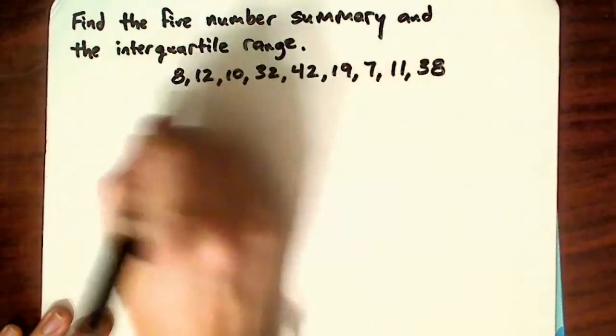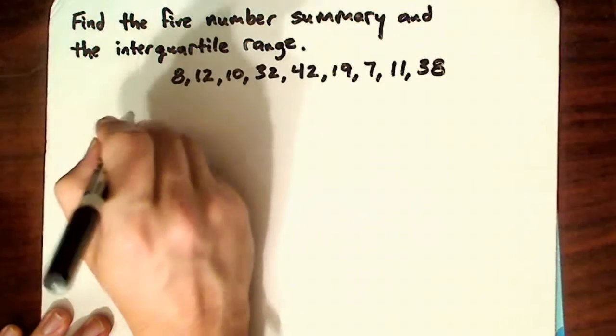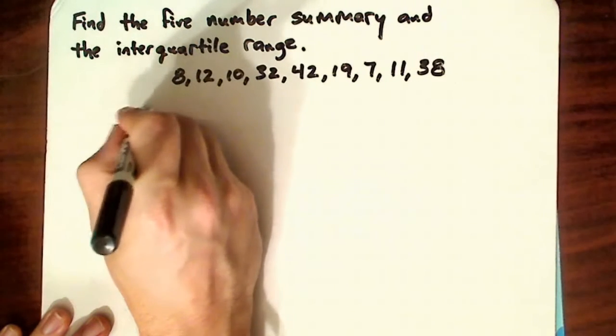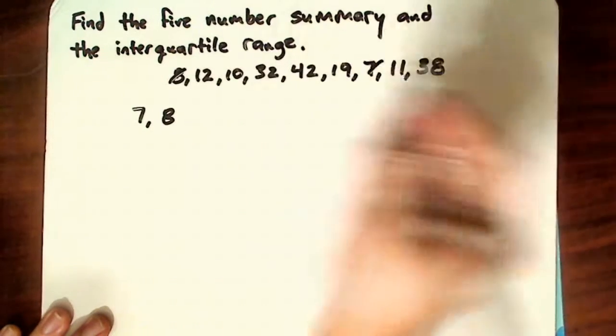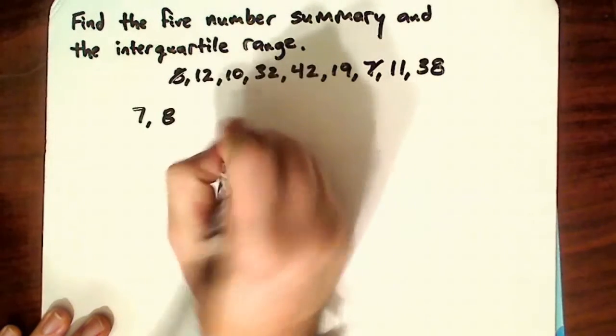So what you want to do is rearrange it. Put it in order. So it would be 7, 8, and I have a tendency to cross it off as I go.